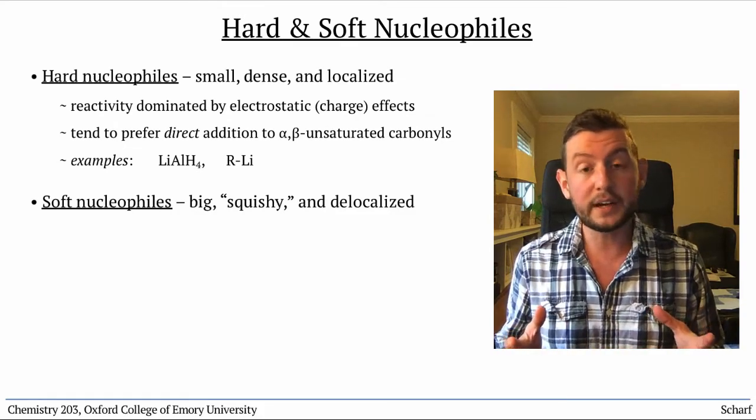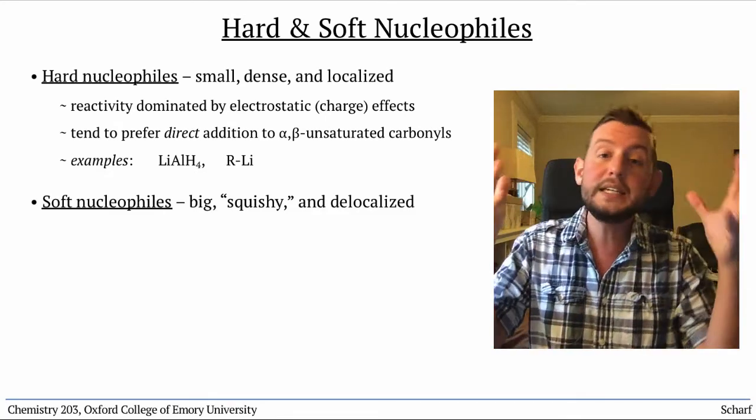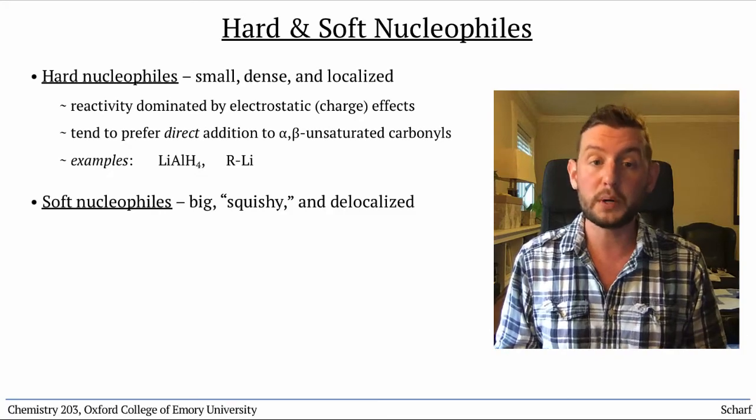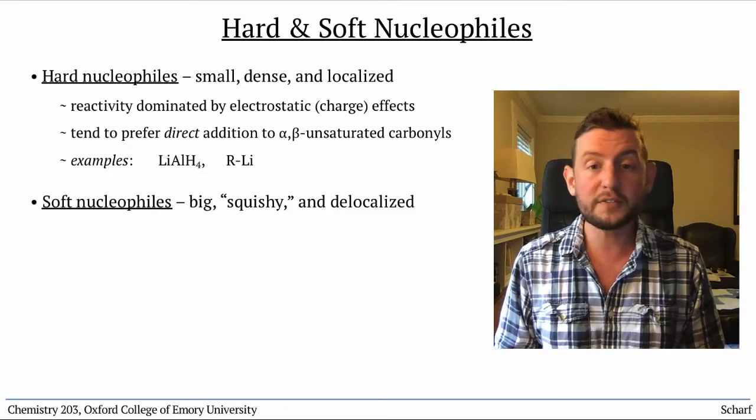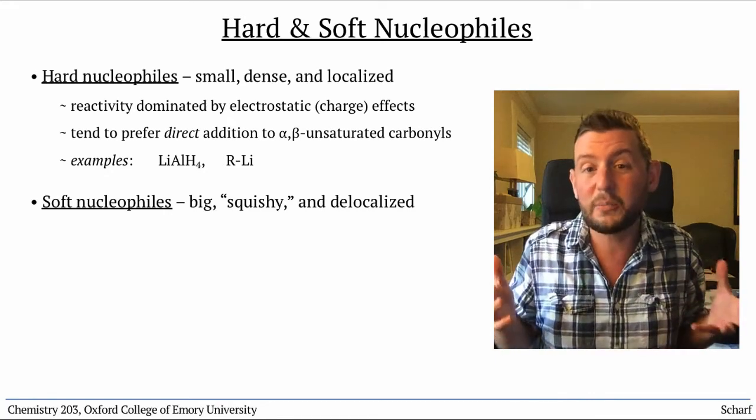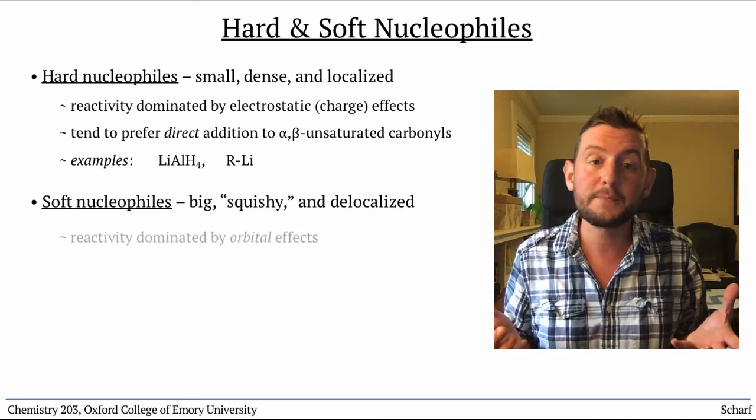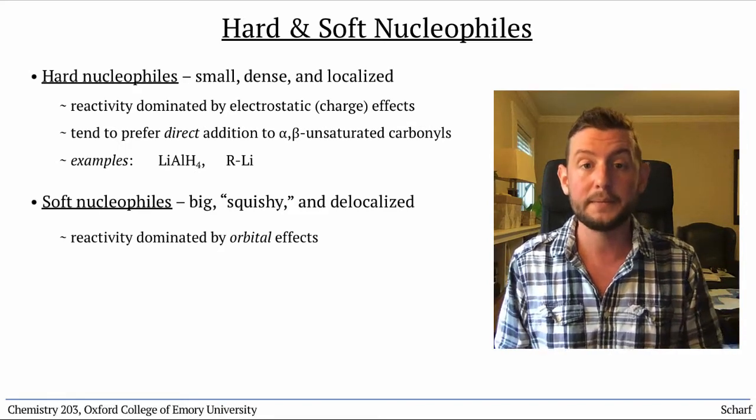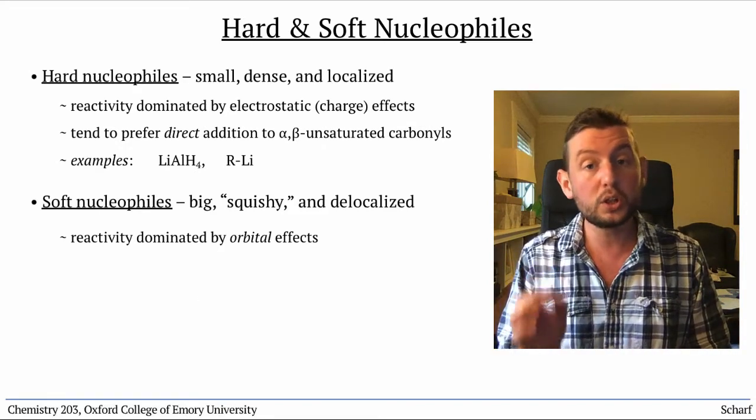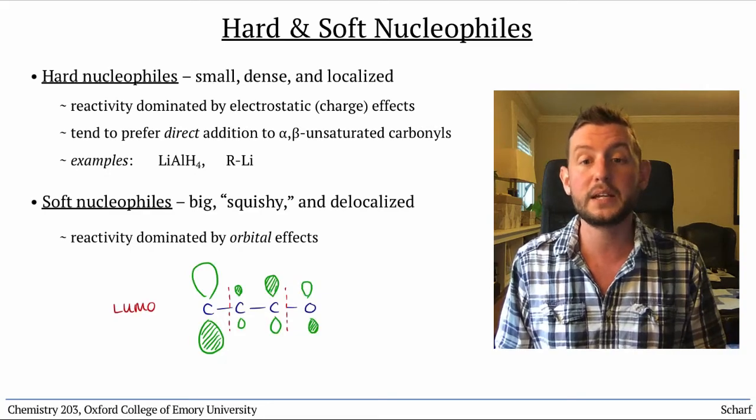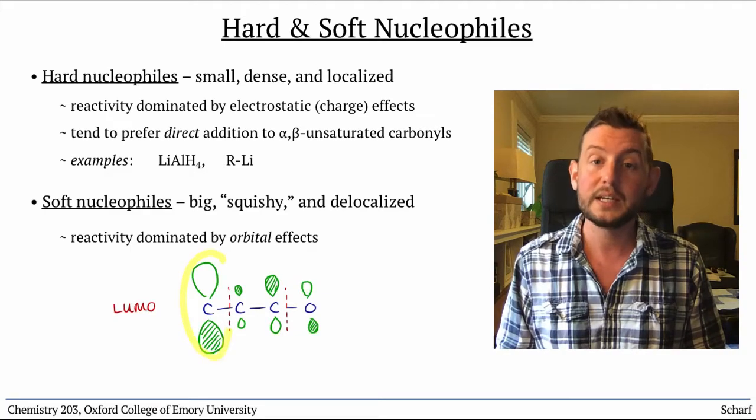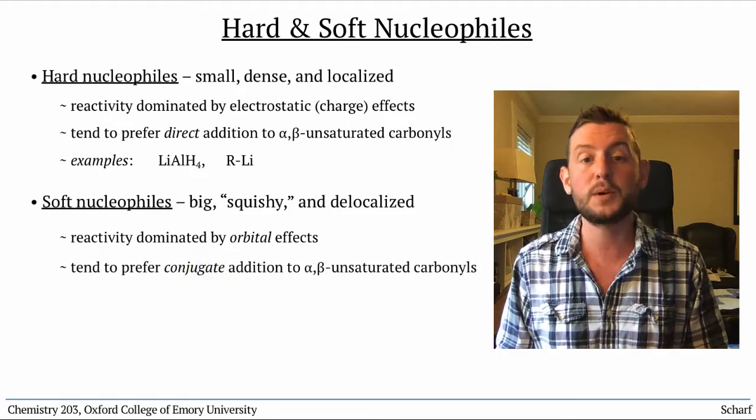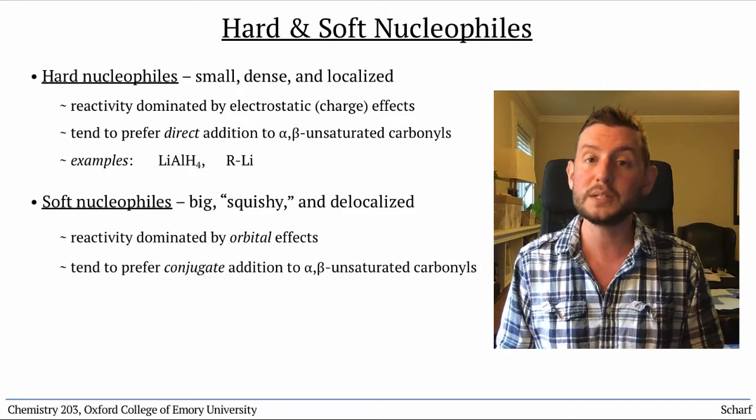Soft nucleophiles, on the other hand, have quite delocalized charge, usually in relatively large HOMOs. Because of this, soft nucleophiles don't care so much about electrostatic effects, but care more about orbital overlap. Since the LUMO of alpha-beta-unsaturated carbonyl compounds is largest at the beta carbon, that is where soft nucleophiles tend to attack.